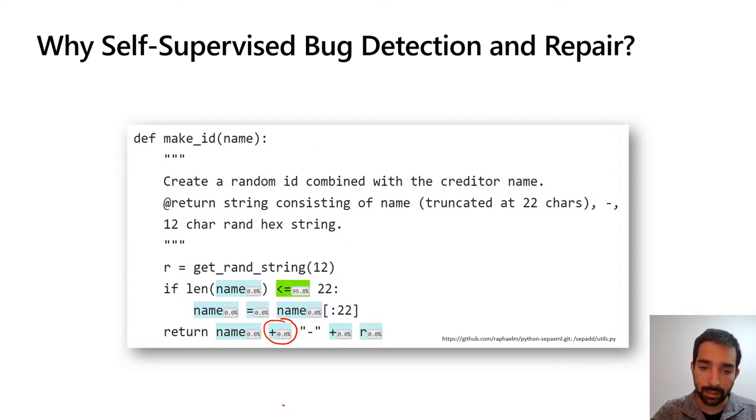However, understanding that this comparison operator should not be less or equal than, but greater than, is a much harder problem, and it's something where we hope that machine learning models could learn.